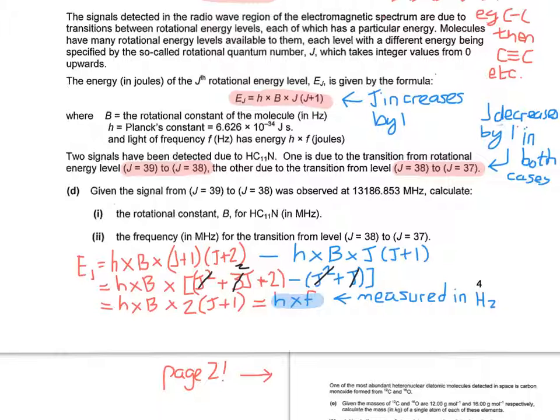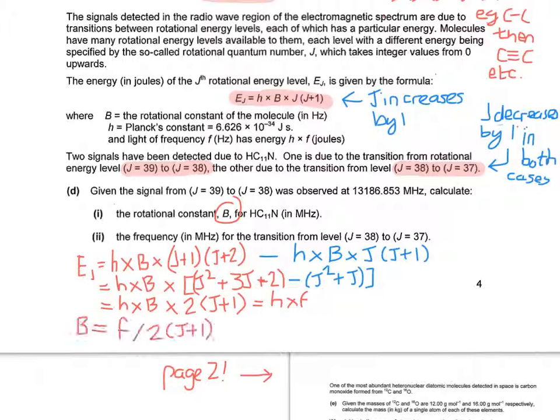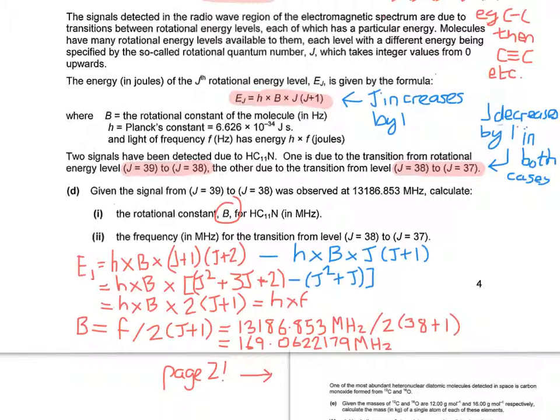That's because h times f is measured in hertz. And the signal from j equals 39 to j equals 38 is also measured in hertz, or megahertz. So because they're the same unit, they must mean the same thing. Because we're looking for B, we have to rearrange this formula so that B is the subject. That cancels down to f divided by 2 times (j + 1). If we now put the numbers in like so, we can calculate what the value of B is, which gives us 169.0622179 megahertz.